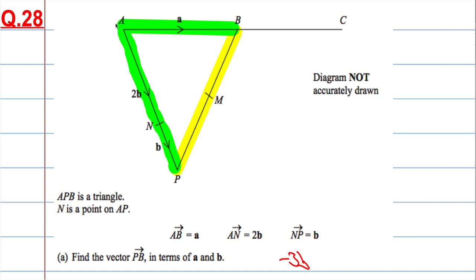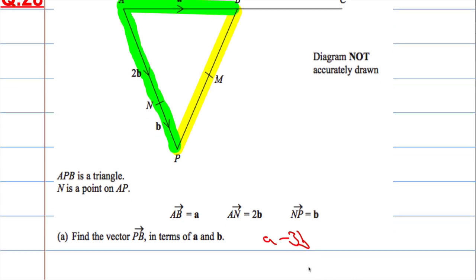Okay, so I'm going to go minus 3b, and then I'm going to travel along here, which is a. So the answer is a minus 3b. So fairly straightforward for the first mark.